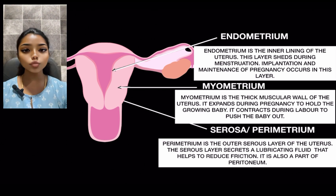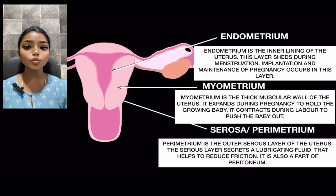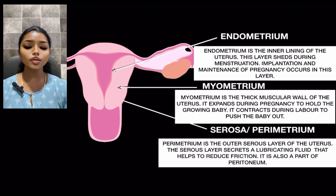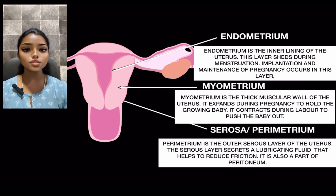The uterus consists of three layers: the endometrium, myometrium and the serosa. The endometrium is the inner lining of the uterus. This layer sheds during menstruation. The implantation and maintenance of pregnancy occurs in this layer.